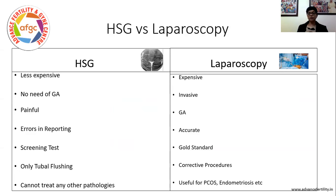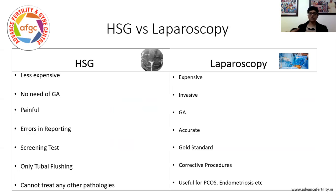So what is the difference between the other tube tests and laparoscopy? The other tube tests are less expensive, require no general anaesthesia — and therefore are more uncomfortable — but they are not 100% sensitive, meaning accurate. Sometimes because of tubal spasm it may show a blocked tube, so there are errors in these tests. You can flush the tubes while pushing the dye, so many times after a tubal test the ladies got pregnant the next cycle.